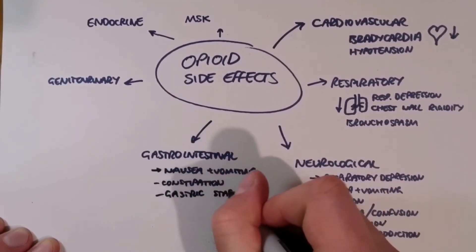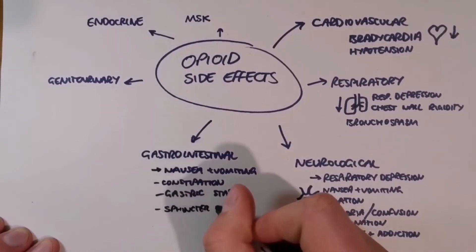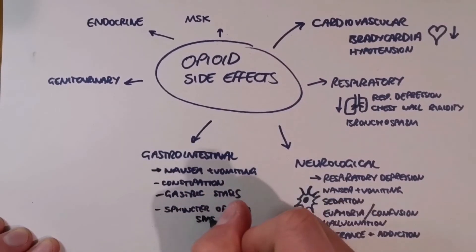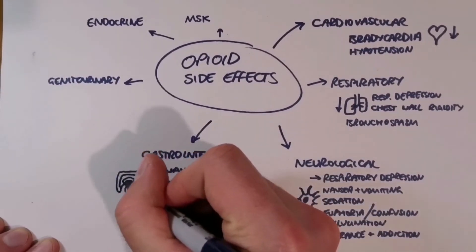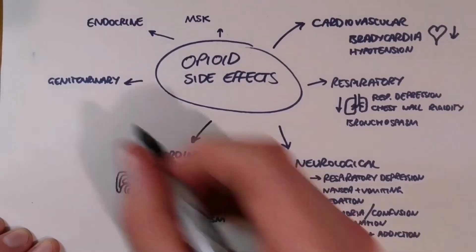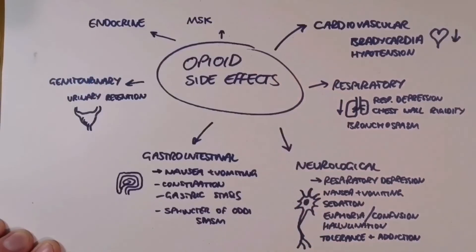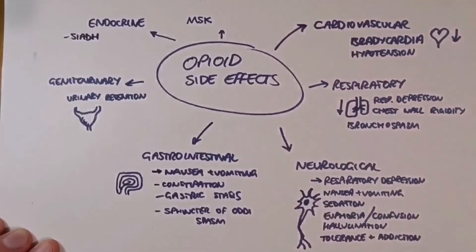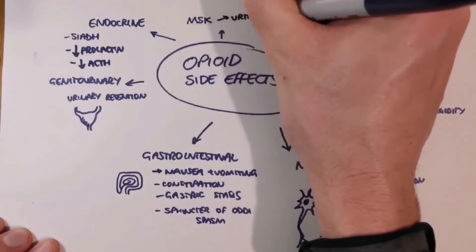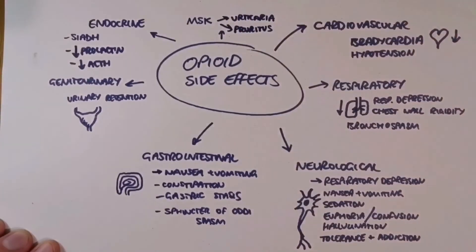Nausea and vomiting is one of the more common GI side effects, as is constipation, which can cause spasm of the sphincter of Oddi. Opioids cause urinary retention, syndrome of inappropriate antidiuretic hormone, and inhibit prolactin and ACTH release from the pituitary, and cause rash and itching.